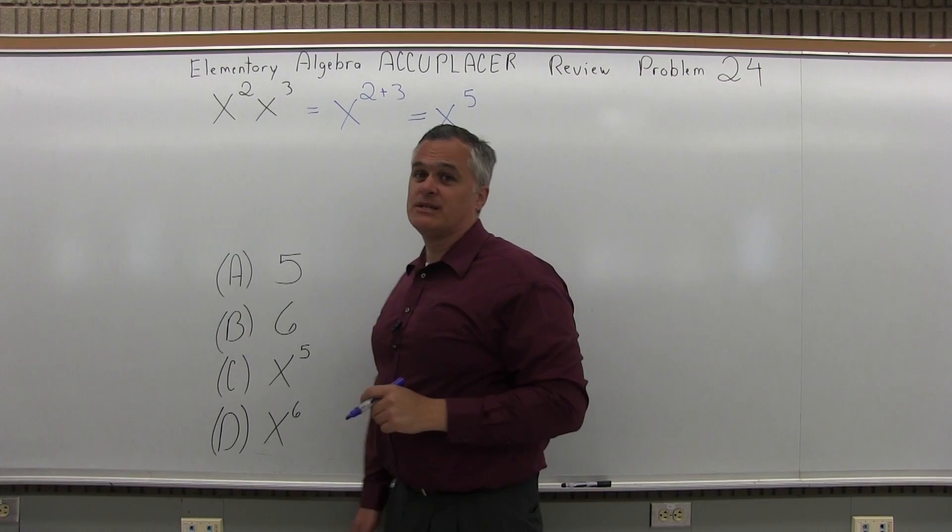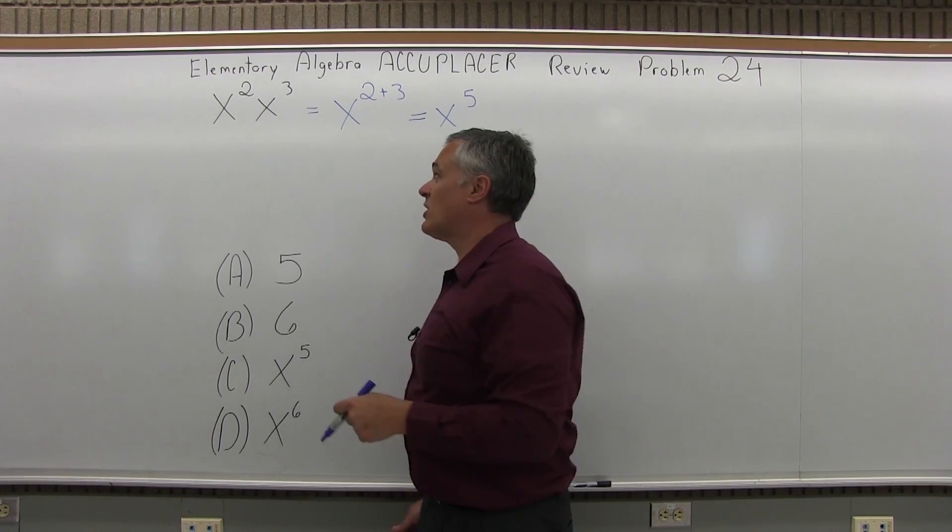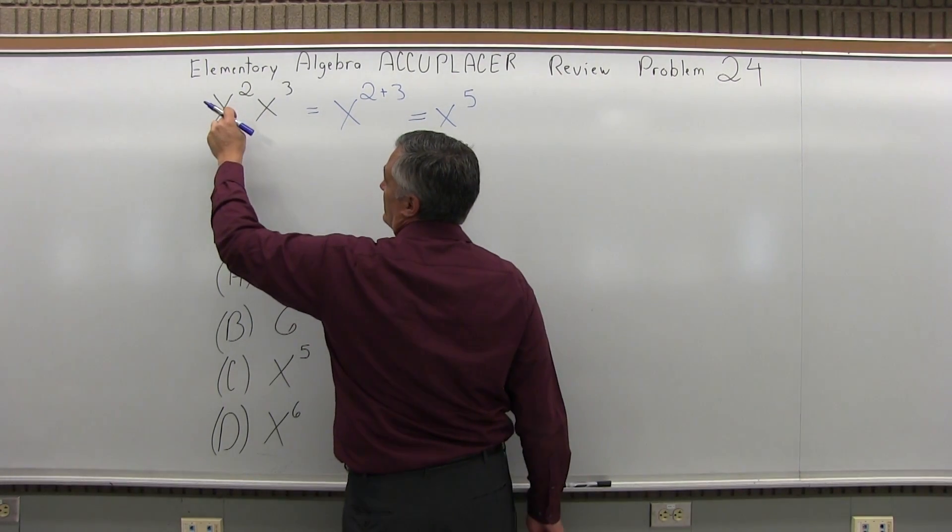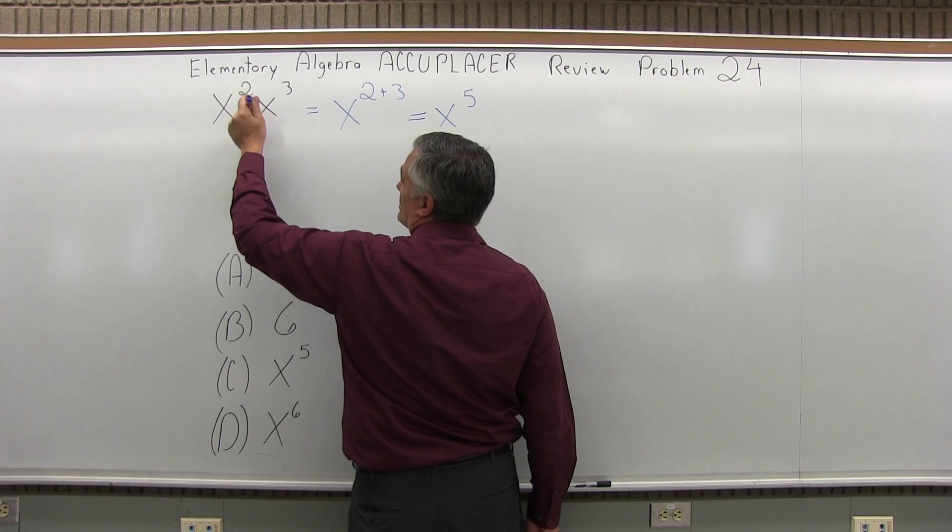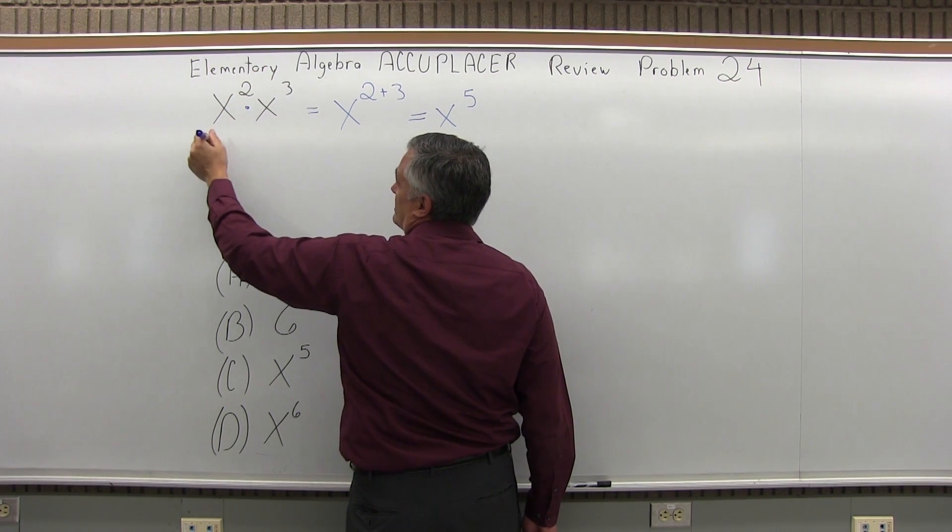Now if you don't remember why it is that you do that, the thing with math is there's always a reason why. So what you have here is x squared, x cubed, it's really x squared times x cubed.